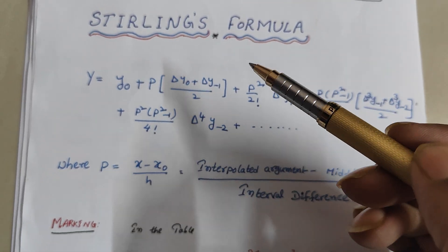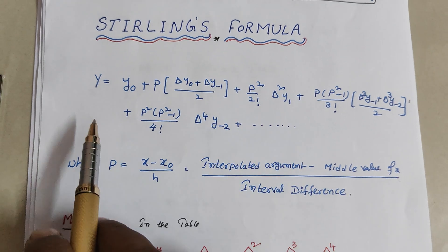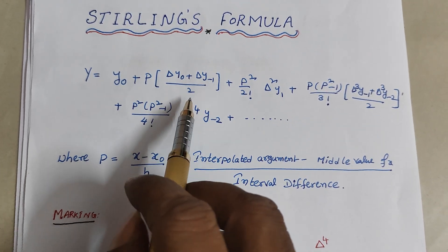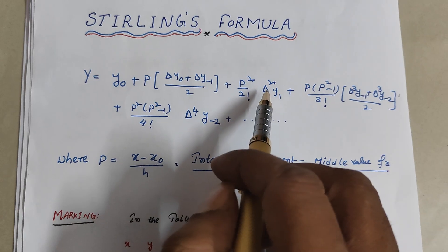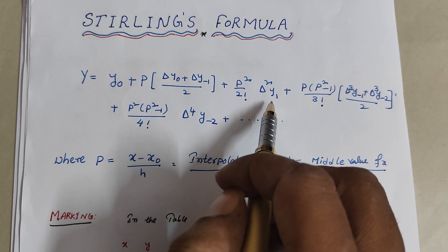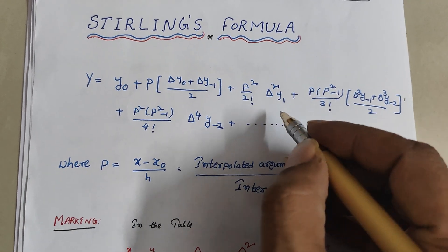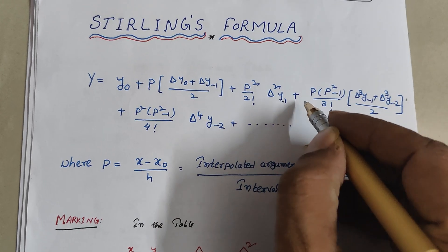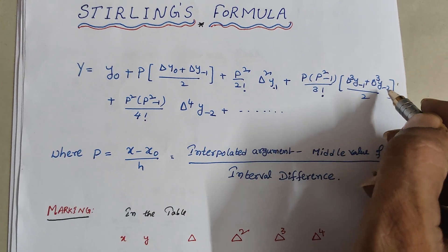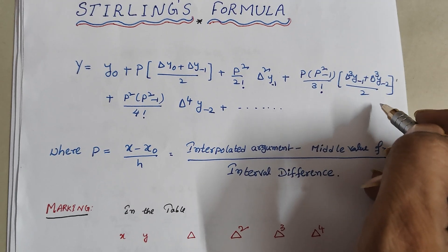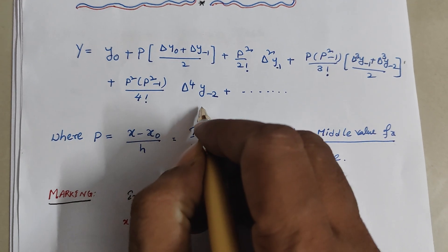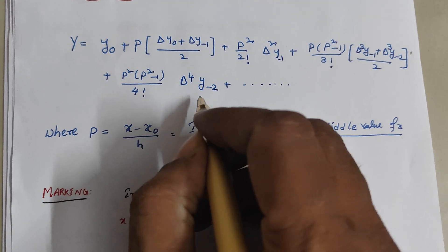So, Stirling's formula is here: y equals y0 plus p into delta y0 plus delta y minus 1 by 2, plus p squared by 2 factorial into delta squared y minus 1, plus p into p squared minus 1 by 3 factorial into delta cubed y minus 1 plus delta cubed y minus 2 by 2.